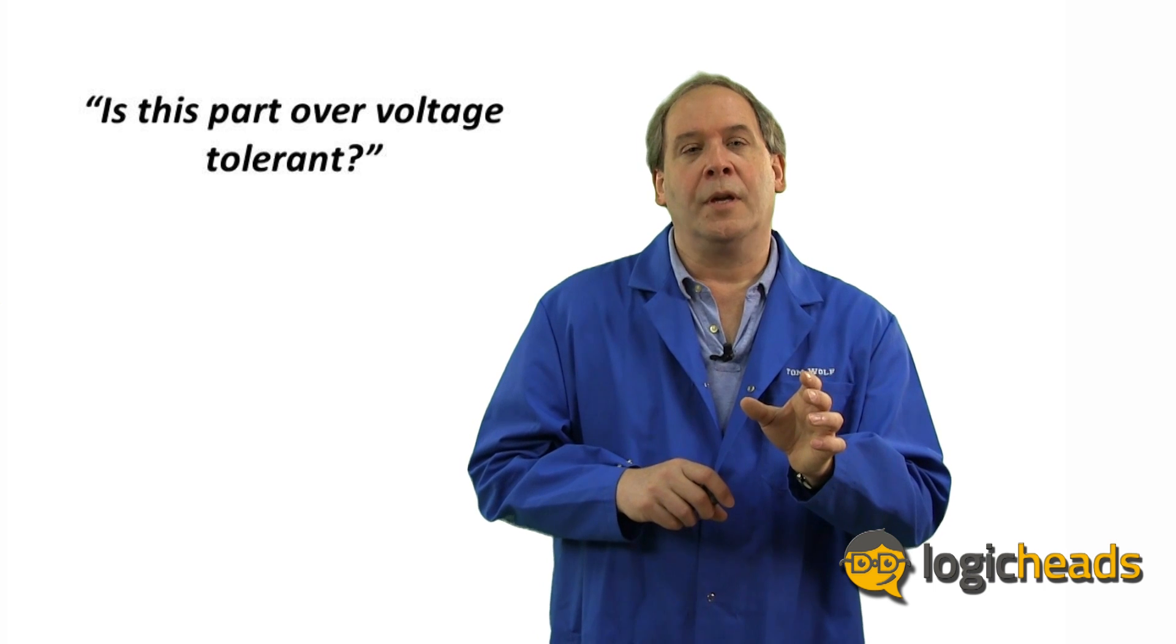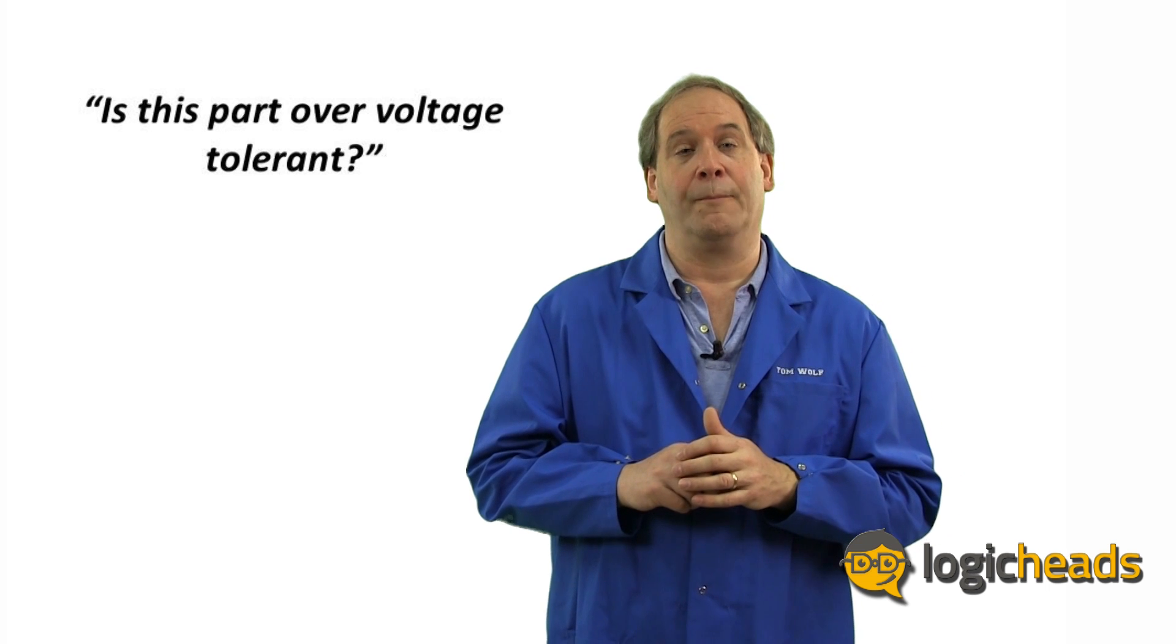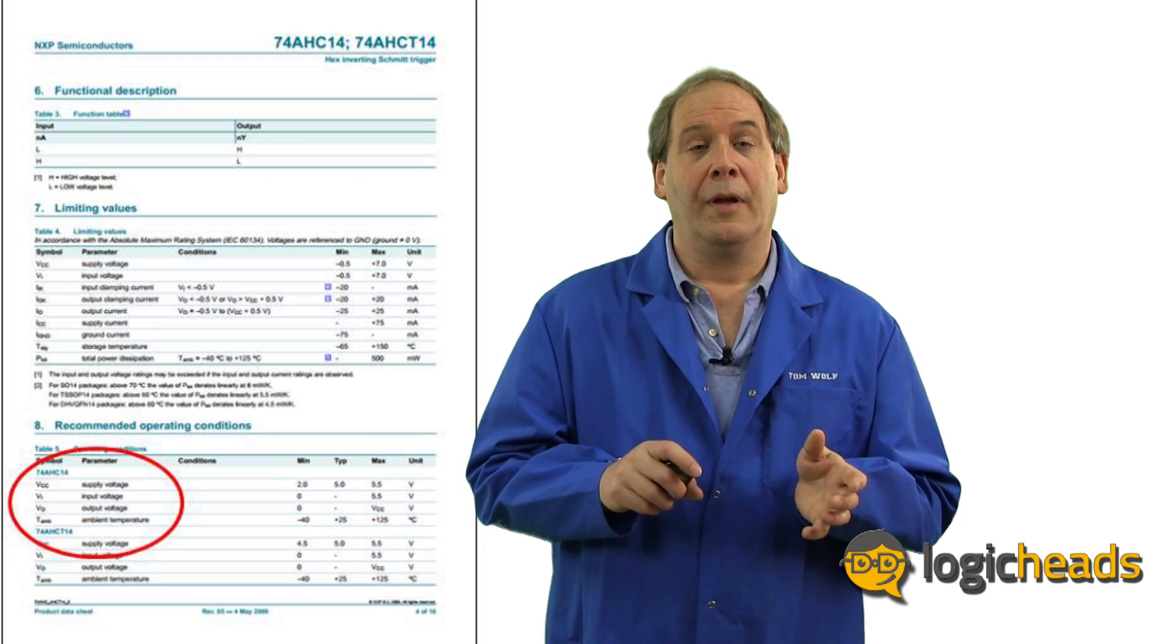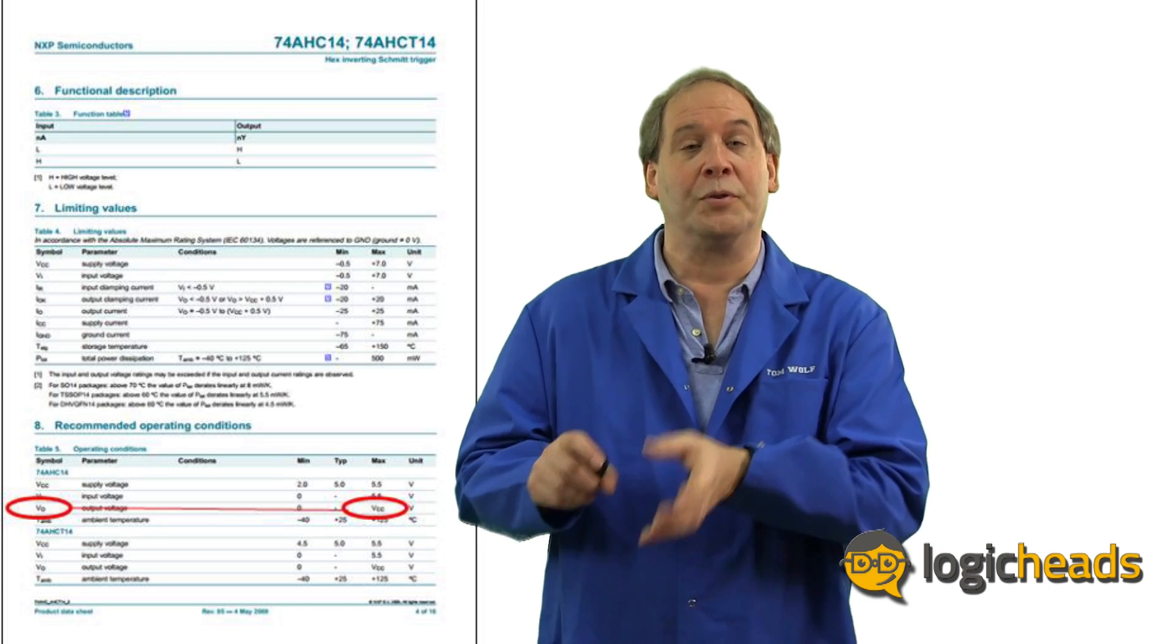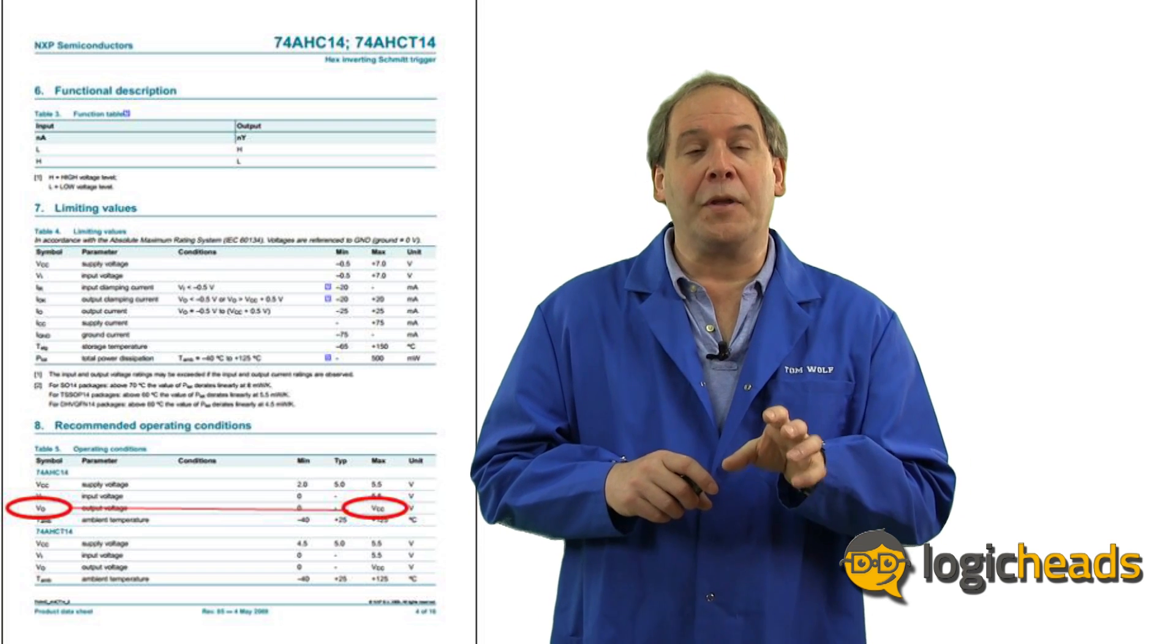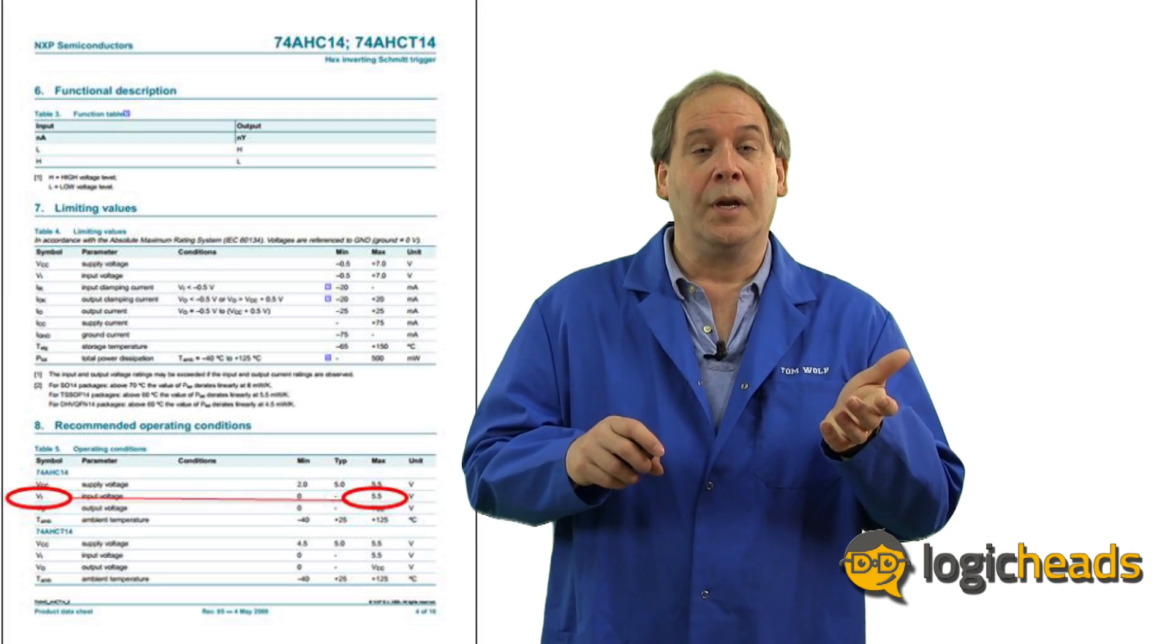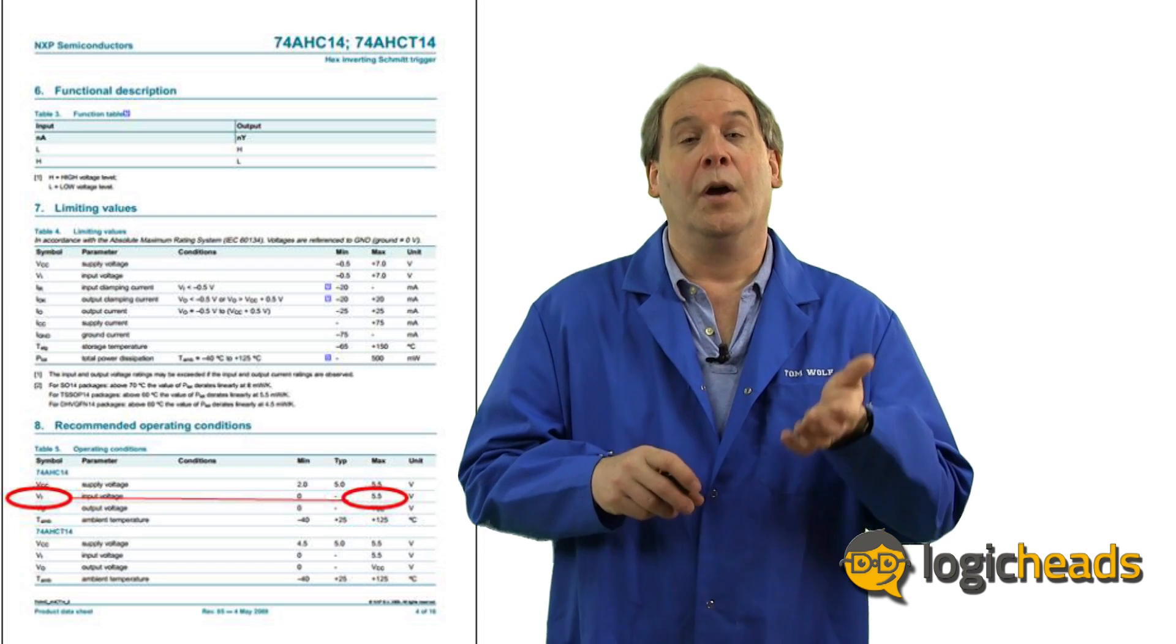Is this part overvoltage tolerant? Overvoltage tolerant means, can you put more voltage on the input or output pin than the supply voltage of VCC? The answer is right here in the recommended value chart. If the value listed is VCC, like for Vout, then the answer is no. Because as VCC drops, then the Vout must also drop because it can never be higher than VCC. But notice the max value for the V input. It's listed as 5.5 volts. Which means even if you power the device with only 2 volts, you can still let the input see 5.5 volts. It is indeed overvoltage tolerant.